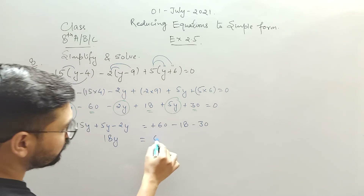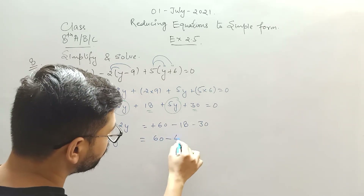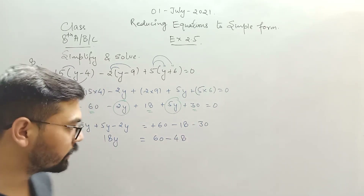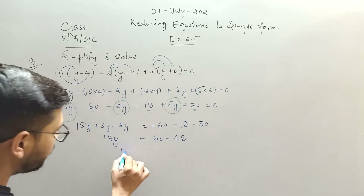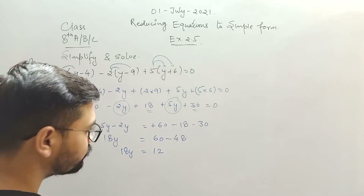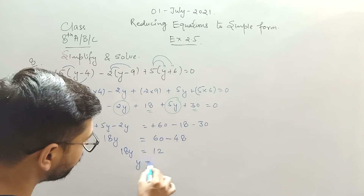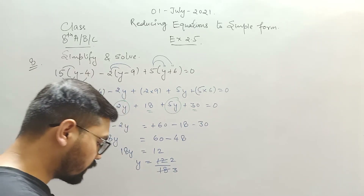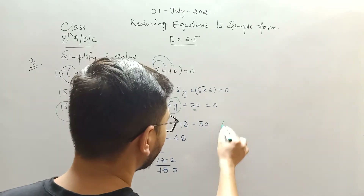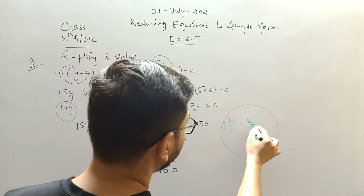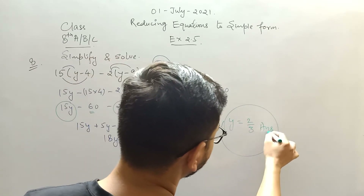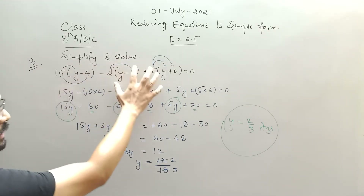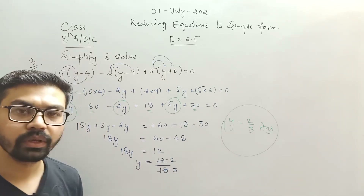Now 60 minus the other constants equals 48. So I can write 18y equals 12, or y equals 12 divided by 18. Since 6 threes are 18 and 6 twos are 12, the answer is y equals 2 divided by 3. So first simplify the expression and then solve for y — note it down.